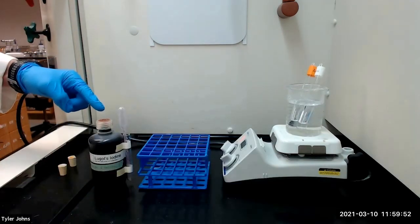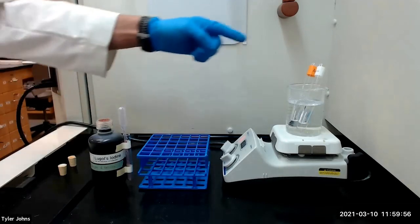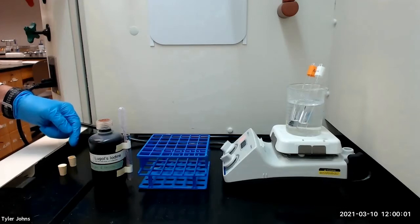We will next add 4 milliliters of Lugol's iodine solution in 1 milliliter portions to the test tubes, making sure to cork and shake the tubes after each addition of iodine.